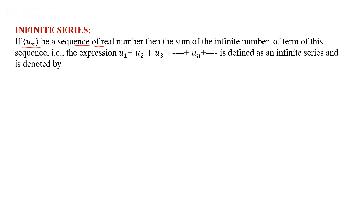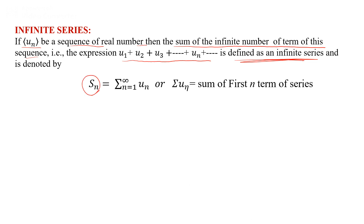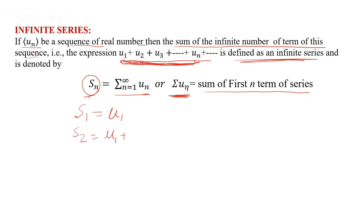Now, what is an infinite series? If {un} is a sequence of real numbers, then the sum of infinite number of terms — u1 plus u2 plus u3 and so on — is defined as an infinite series, denoted by Sn or summation from n=1 to infinity of un. Here Sn represents the sum of the first n terms: S1 = u1, S2 = u1 + u2, S3 = u1 + u2 + u3, and so on.